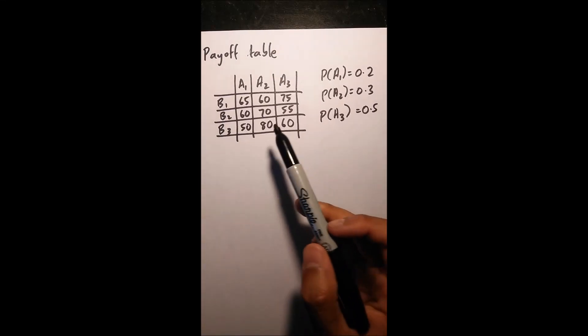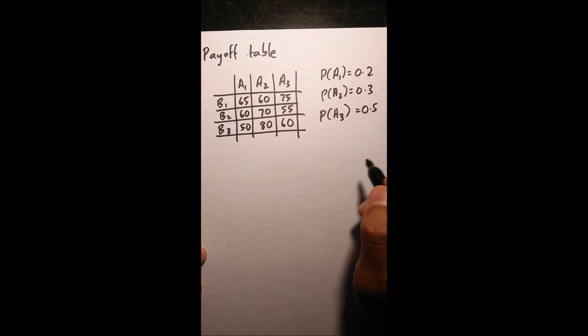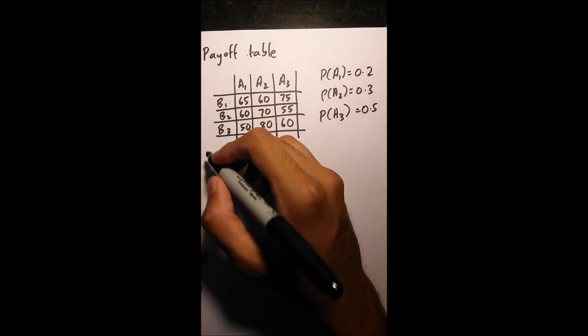Okay, so in this question you're given a payoff table and given probabilities of each of your columns. What we're going to do is find EMV, EOL, and our EVPI. So let's start with our EMV.